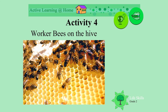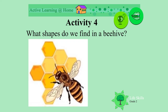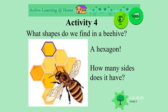Look at the worker bees. They produce honey from the pollen and nectar — we say that they pollinate the flowers. What shapes can we find in a beehive? Can you see this shape? It's a hexagon. A hexagon has how many sides? Six! Look at the six-sided shape.